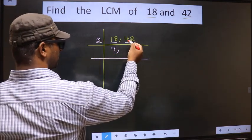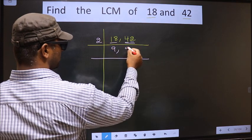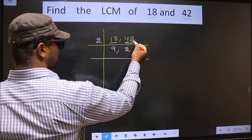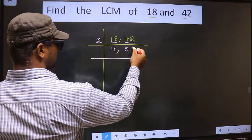The first number 4, when do we get 4 in 2 table? 2, 2 is 4. The other number 2, when do we get 2 in 2 table? 2, 1 is 2.